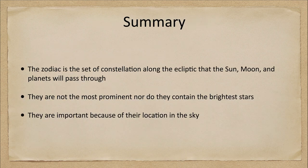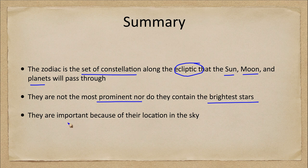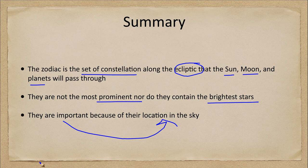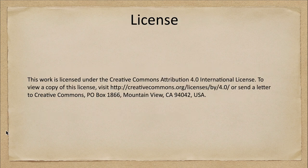To summarize: the zodiac is the set of constellations along the ecliptic — the ones that the sun, moon, and planets pass through. They are not necessarily the most prominent constellations and do not contain the brightest stars in the sky; some have bright stars, others are relatively faint. They are important because of their location, as they are where we will find many of those solar system objects. That concludes this lecture on the zodiac — we'll be back next time for another topic in astronomy. Have a great day, everyone, and I will see you in class.